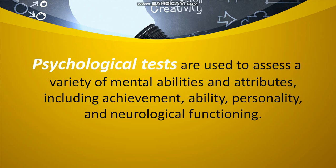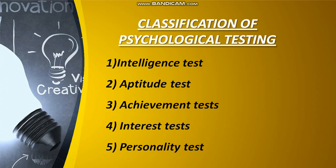First of all, we will find out the definition of Psychological Test. It is used to assess a variety of mental abilities and attributes, including achievement, ability, personality, and neurological functioning. It is classified into 5 classes: Number 1 is Intelligence Test, Number 2 is Aptitude Test, Number 3 is Achievement Test, Number 4 is Interest Test, and Number 5 is Personality.